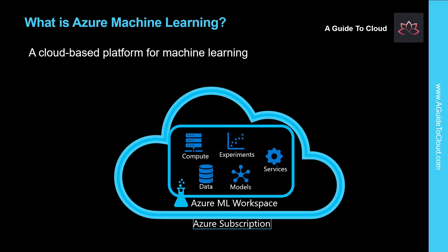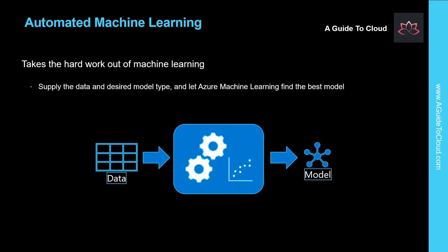So let's have a look at what is automated machine learning. Automated machine learning in Azure Machine Learning provides the easiest way to train a machine learning model for regression or classification. There is a visual interface for automated machine learning in the Azure Machine Learning Studio web portal. You just need to supply the training data and select the required model type, and Azure ML does the rest.